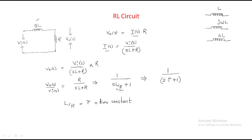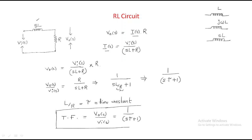So the transfer function of the system, V_out(s) divided by V_i(s), gives 1 by (sτ + 1). This is the same as the RC circuit. In the RC circuit you get the same equation, but τ equals RC. For the RL circuit, τ equals L/R — this is the only difference. These are first-order systems because each consists of only one storage element: L for RL, and C for RC.